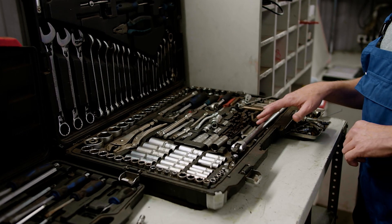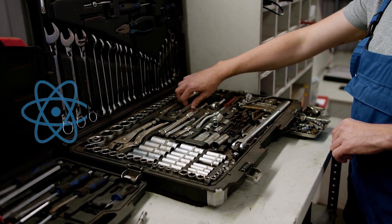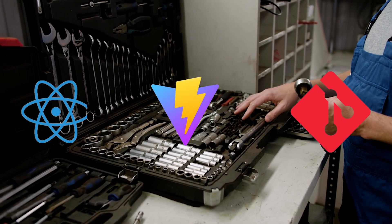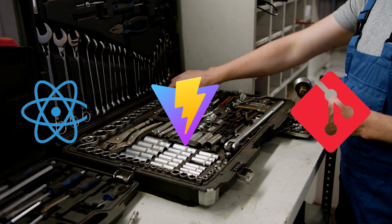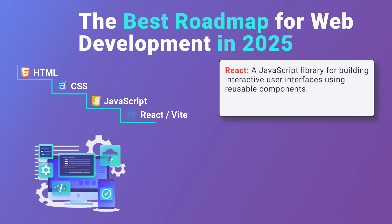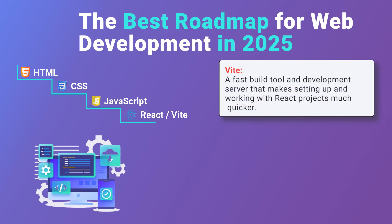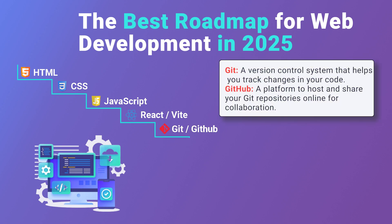The second step is to learn essential developer tools such as React, Vite, Git, and GitHub to build interactive applications. React is a JavaScript library for building interactive user interfaces using reusable components. Vite is a fast build tool and development server that makes setting up and working with React projects much quicker. Git is a version control system that helps you track changes in your code.